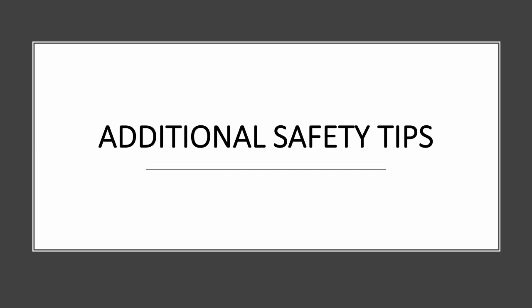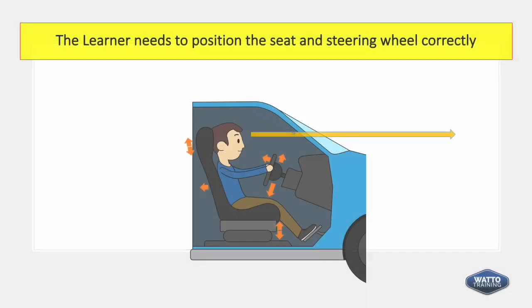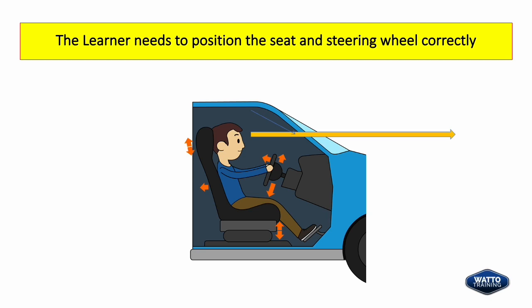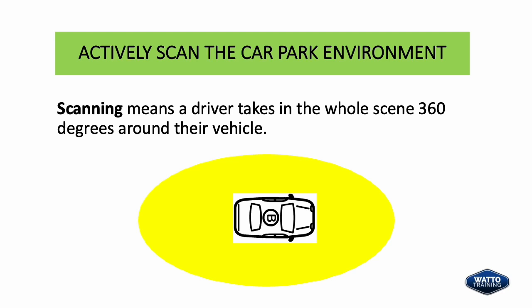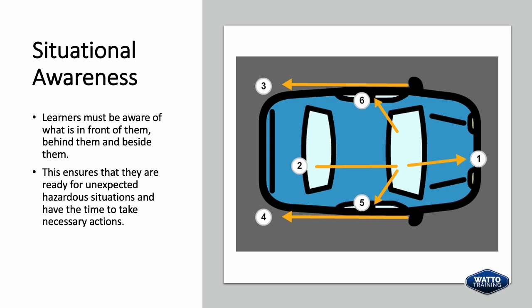Additional safety tips. To set up for success the learner needs to position the seat and steering wheel correctly for maximum vision. They need to actively scan the car park environment. Scanning means a driver takes in the whole scene 360 degrees around their vehicle. Learners must be aware of what is in front of them, behind them, and beside them. This ensures that they are ready for unexpected hazardous situations and have the time to take necessary actions.